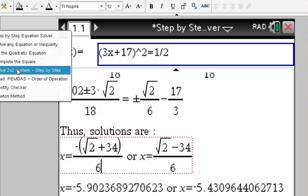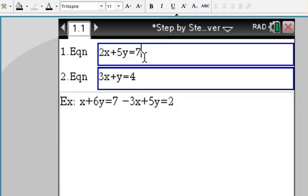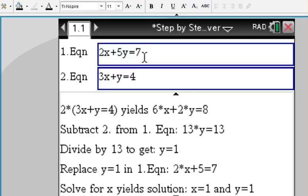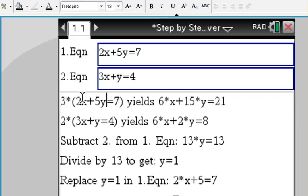What about if we want to solve a two-by-two system? No problem. We can enter our two equations, and then we're going to use the elimination method. So I scroll up: first equation gets multiplied by 3, the second by 2.